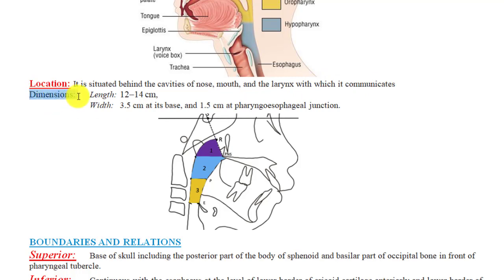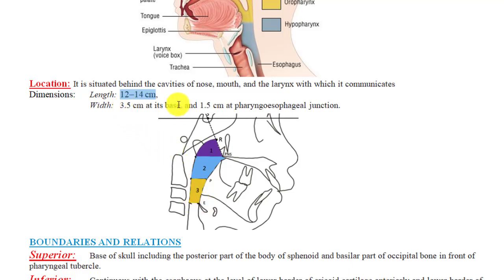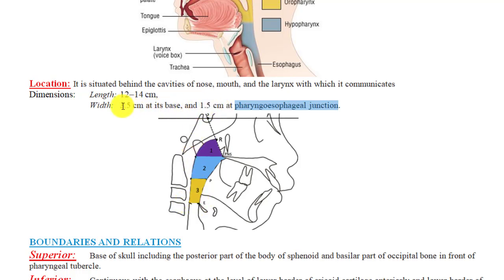The dimensions of the pharynx: its length is about 12 to 14 centimeters. Its width is 3.5 centimeters at the base, where it is wider, and 1.5 centimeters at the pharyngoesophageal junction, where it is narrower.